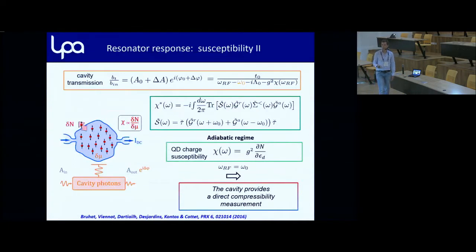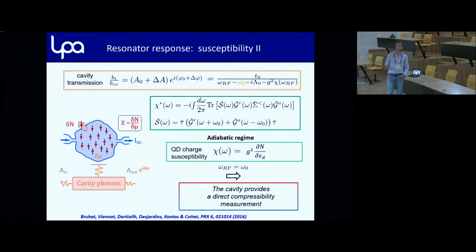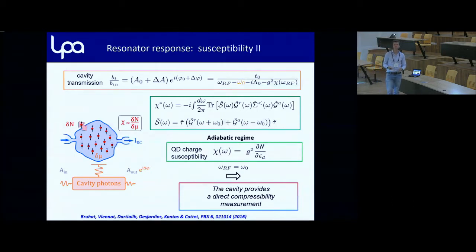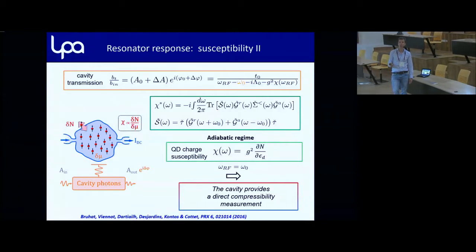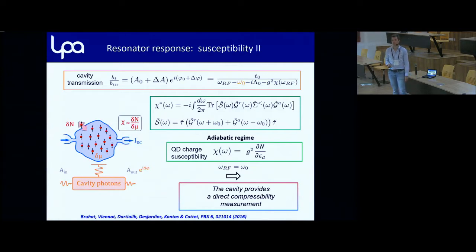This is essentially what I just wrote on the blackboard. This is the adiabatic regime where you just have the compressibility — the charge susceptibility — showing up. This is very important: when you have correlation effects, the compressibility is completely different from the conductance. Tomorrow I'll show a specific example where you can learn a lot from compressibility measurements under strong electronic correlations.